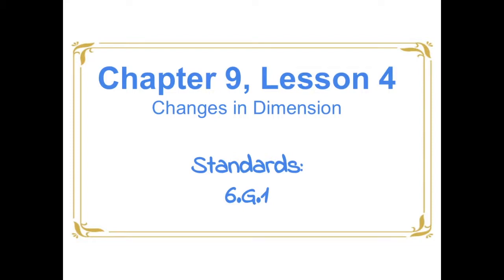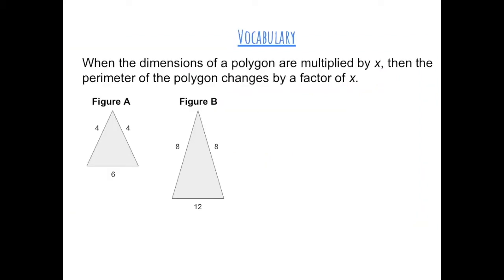Chapter 9, Lesson 4: Changes in Dimension. When the dimensions of a polygon are multiplied by some number x, then the perimeter of the polygon changes by that number times the perimeter.